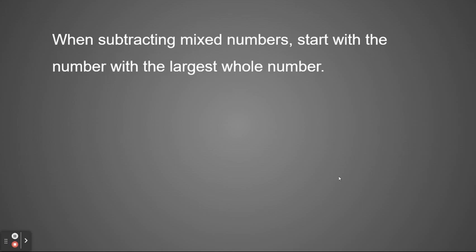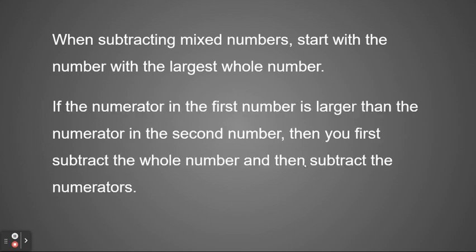When subtracting mixed numbers, you always start with the number that has the largest whole number, just like in other subtraction. If the numerator in the first (larger) number is greater than the numerator in the second number, you don't need to regroup — you can first subtract the whole numbers and then subtract the numerators.